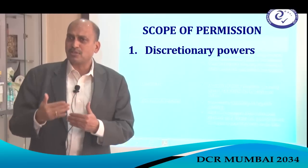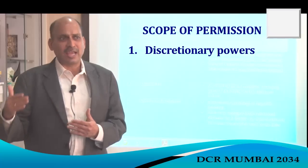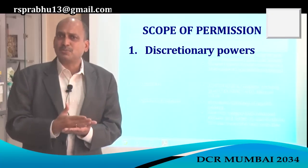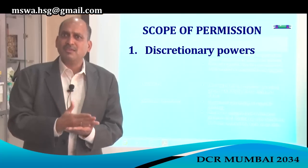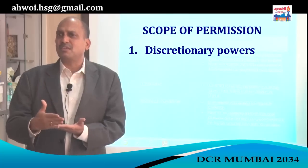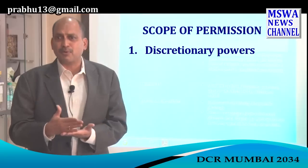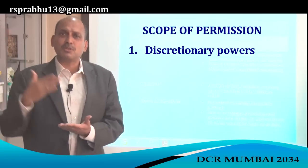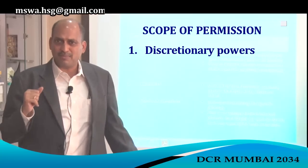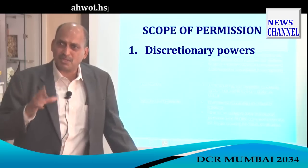This way the proposal used to get delayed. When it goes to the BMC Commissioner — the highest authority — the plan goes from assistant engineer to junior engineer, deputy engineer, building proposal department, chief engineer, and then to the Municipal Commissioner. It takes at least six months to one year to get approval from the BMC Commissioner.